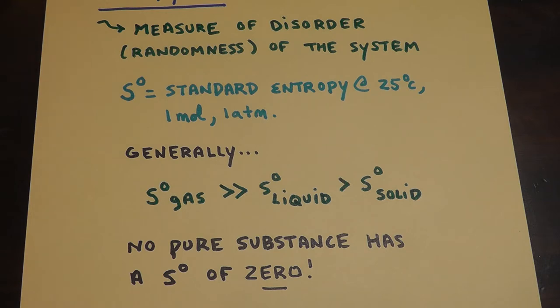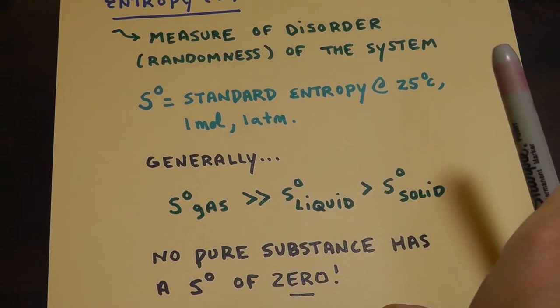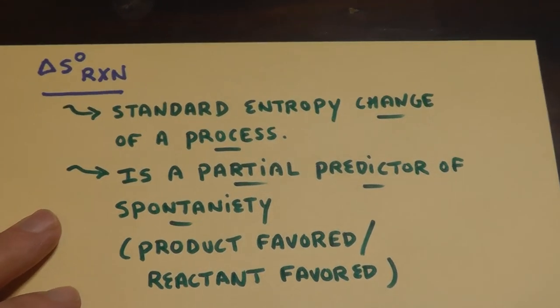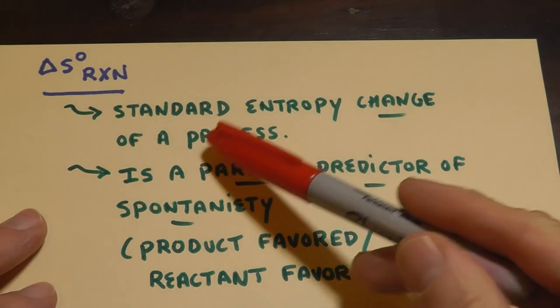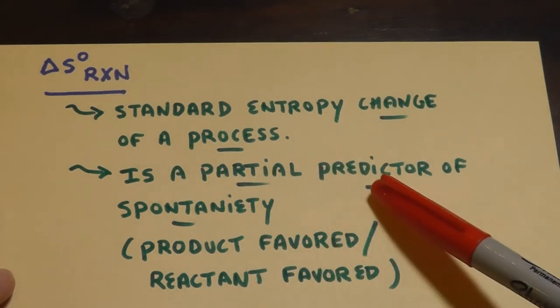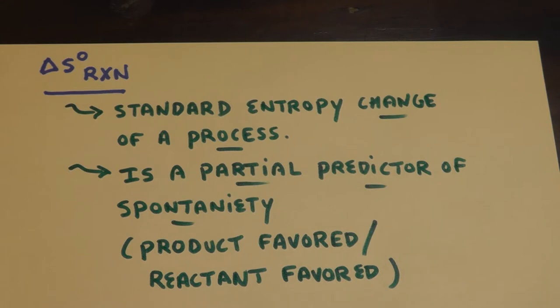We're going to talk about delta S of processes. You can't measure entropy directly - there's no entropy-ometer. We could subtract products minus reactants to figure out delta S of the process. Is it positive? Is it negative? Is the system becoming more disordered or less disordered? This is a partial predictor, the thing that might give processes a nudge to being spontaneous or not.